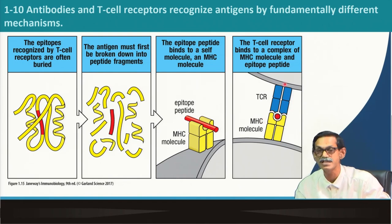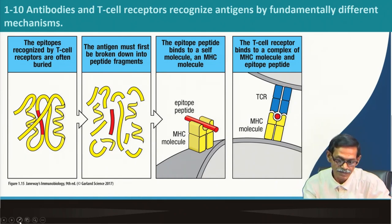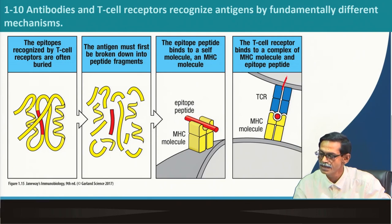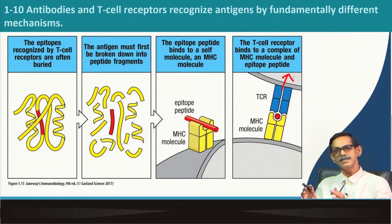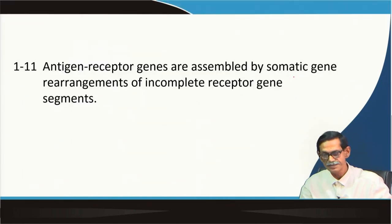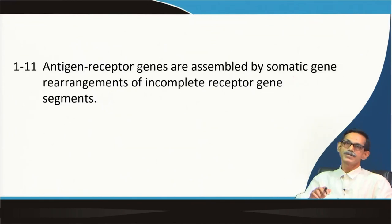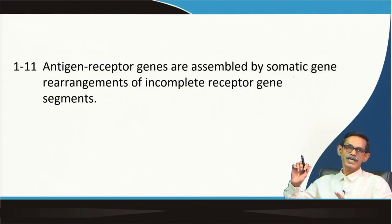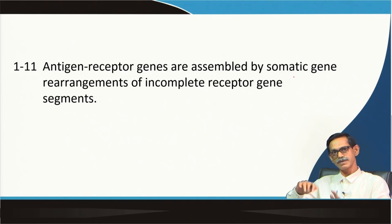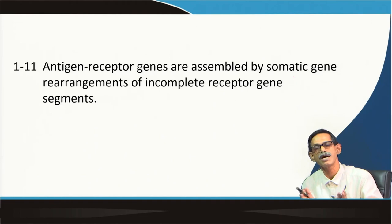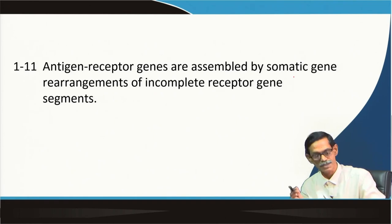After this interaction, the signal goes inside the T cell, and then the T cell will multiply, proliferate, and perform its effector function. Antigen receptor genes are assembled by somatic rearrangement of incomplete receptor gene segments — which is complex and will be discussed in much more detail later — including how this variety of receptors, which can recognize a variety of antigens or epitopes, is generated.